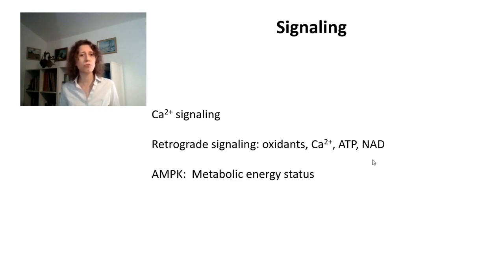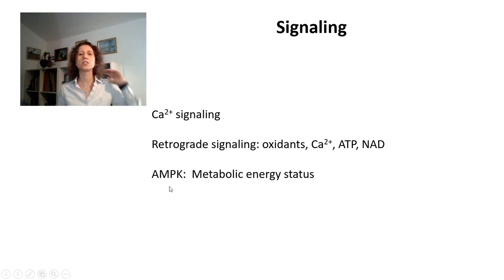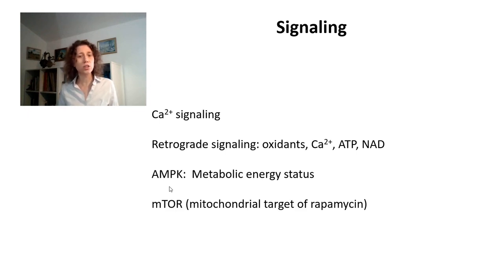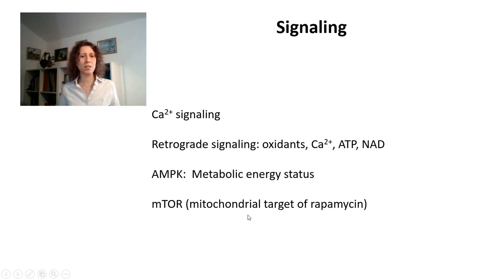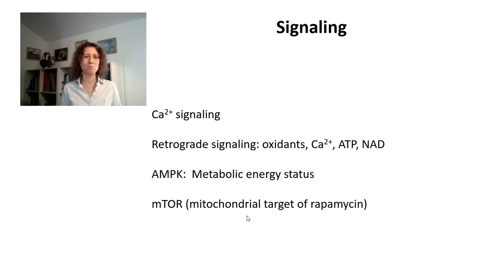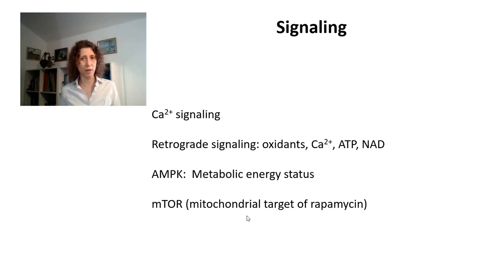Classically, mitochondria form ATP and are therefore determinant in the energy status of the cell. Mitochondria are very determinant in signaling processes involving AMPK, which is the sensor of energy level in the cell. Finally, mitochondria are also very determinant in the activities of mTOR, a kinase that regulates metabolism in very different manners, with many signaling pathways involving metabolism regulation being regulated by mTOR.